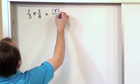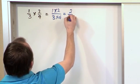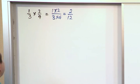So you have 1 times 2, and on the bottom you have 3 times 4. 1 times 2 gives you 2. 3 times 4 gives you 12. So that's the answer, but we always check and see can we simplify this?